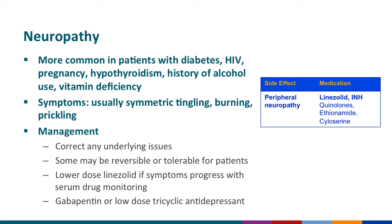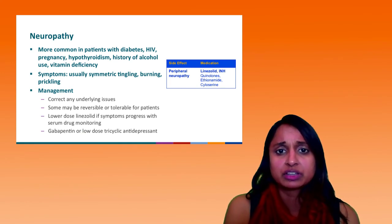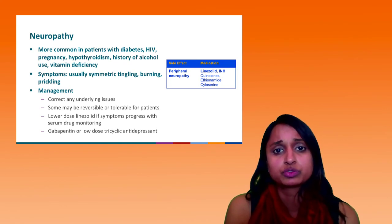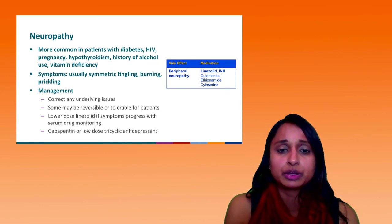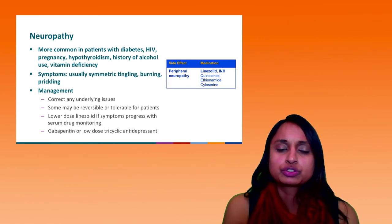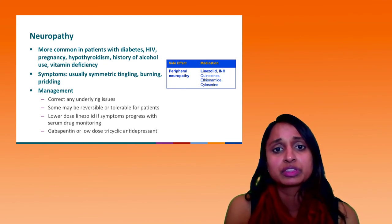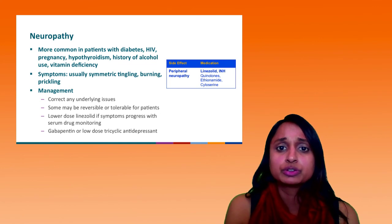Neuropathy is more common in patients with diabetes, HIV, pregnancy, hypothyroidism, those who have a history of alcohol use, and vitamin deficiency. The symptoms are usually symmetric and can be tingling, burning, or prickling sensation. There are several ways to manage neuropathy. First, you want to correct the underlying issue — for example, if there's a vitamin deficiency or hypothyroidism, try to correct those first. For some patients it could be tolerable if it's mild or minimal neuropathy, and some of it may even be reversible. For other patients, you could try lowering the dose of a medication — for example, linezolid — if the patient is further along in treatment, and then follow with drug levels. Lastly, you could try gabapentin or a low-dose tricyclic medication, which can also help with pain.